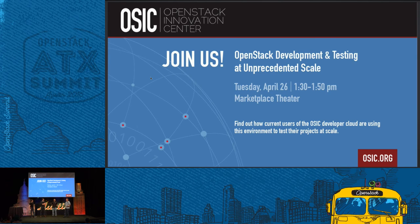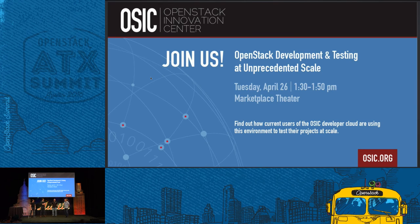For folks interested in participating in OSIC — when I signed up I think it was a Google Doc, though that's a more formal process now. I just put in the tools I was using and what I intended to use OSIC for, then someone from Rackspace reached out and started the conversation. Very simple — fill in a form and within about a month I had the allocation. It worked very smoothly.